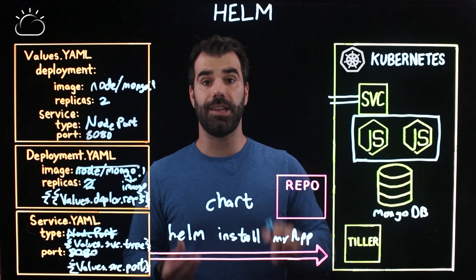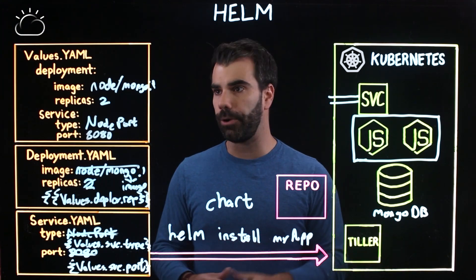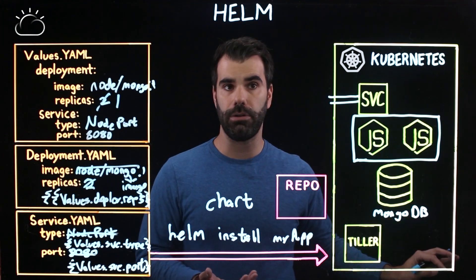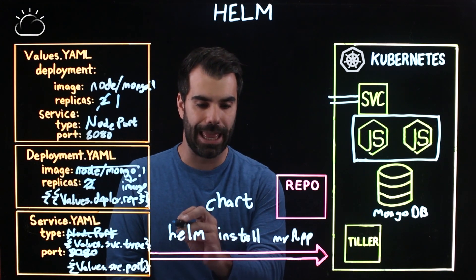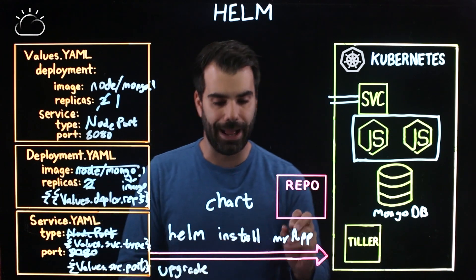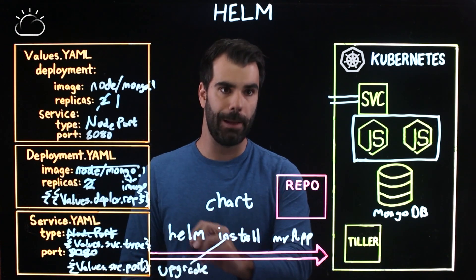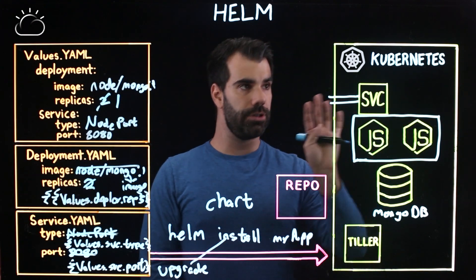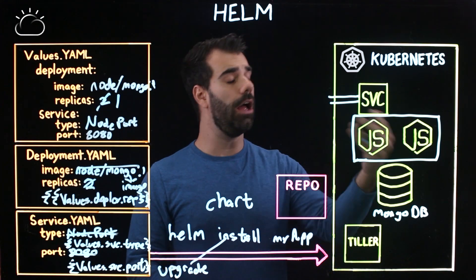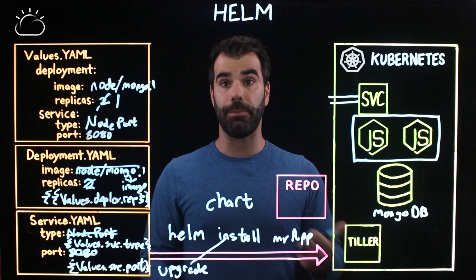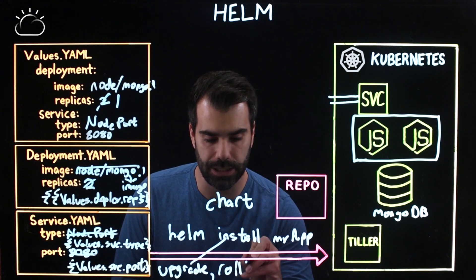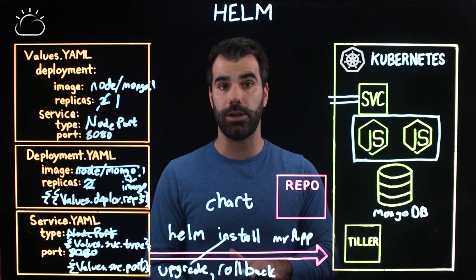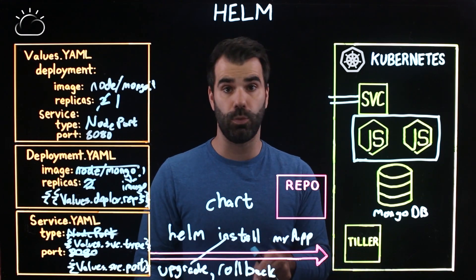This becomes extra useful when you want to upgrade to a new configuration and roll back. Let's say you're past the holidays and you want to spin down to only one replica. Rather than taking down the whole application and redeploying with the new configuration, you could simply type: helm upgrade my-app. If you made a mistake and something doesn't work, the way to roll that back is the rollback command. Helm also keeps a version history of different configurations so you can roll back to the last known working configuration whenever you want.